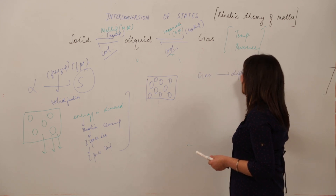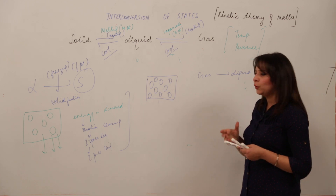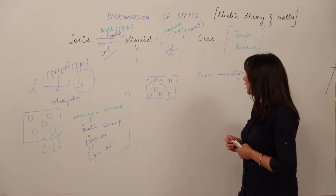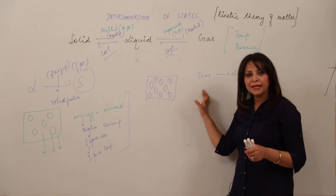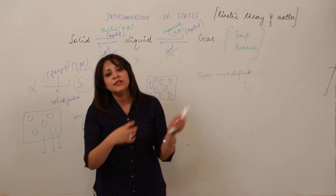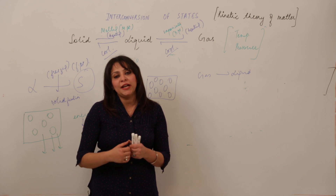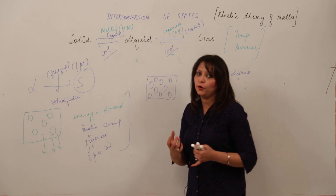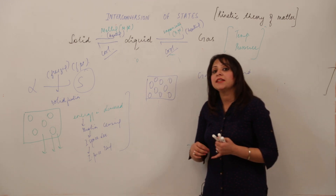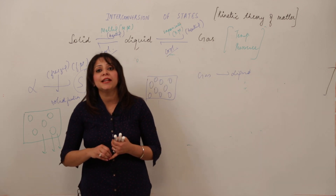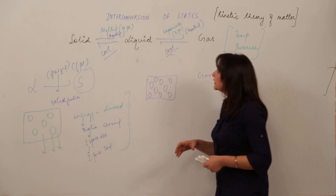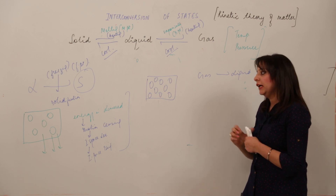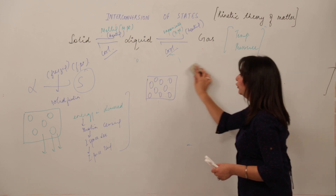Similarly, for the conversion of gas to liquid: in gas, molecules are far apart. When we cool the gas, they release heat, motion ceases, kinetic energy decreases, space decreases, and force increases, converting the gas into the liquid state. This is how the states are interconverted from one to another by heating or cooling.